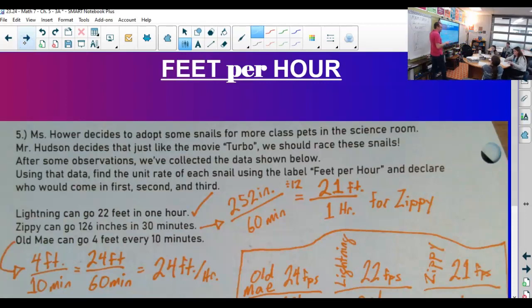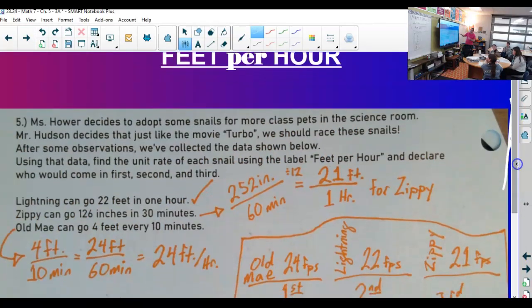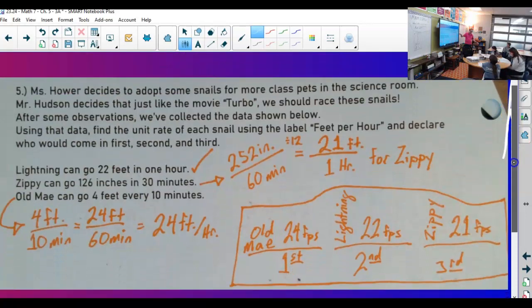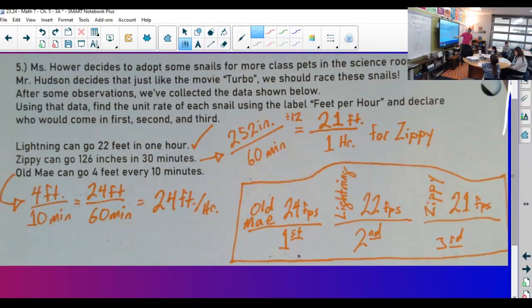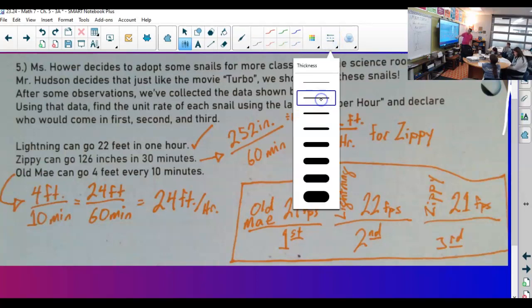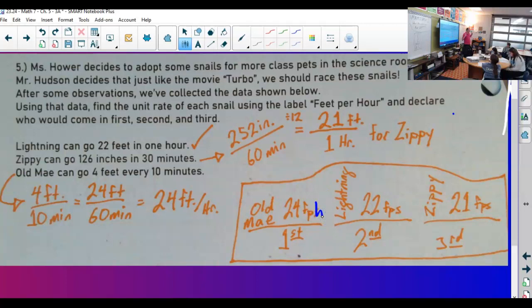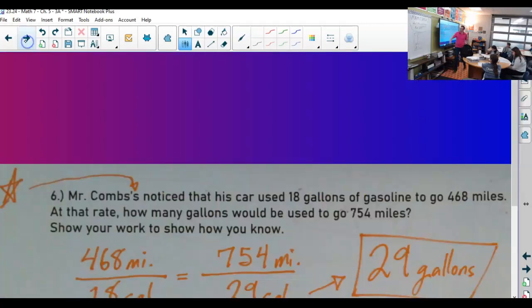We'll come back to this if you want. A lot of you guys actually got this right. But there's so many different ways to talk about our answers. You can do feet per hour, feet per minute, inches per hour, inches per minute. If you wanted to go crazy, you could even go all the way to seconds. If you did feet per hour - this is the one that I have on my key - it's 24, 22, 21. Old May wins. Lightning takes second. And Zippy wasn't so zippy today.